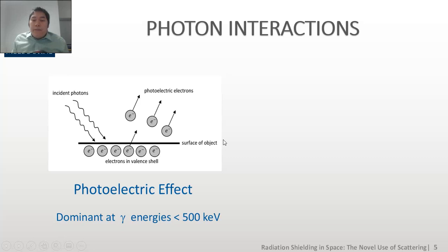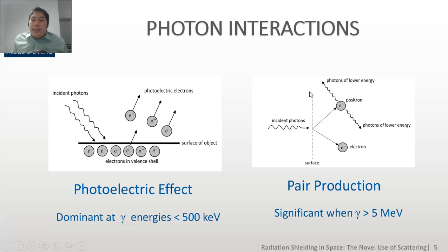Second, we have pair production where an incident photon strikes a surface and causes the creation of two particles: first an electron, second a positive particle known as a positron, which is very unstable and thus readily decomposes to two photons of lower energy. The energy of those photons is typically above 5 mega electron volts for pair production to occur.